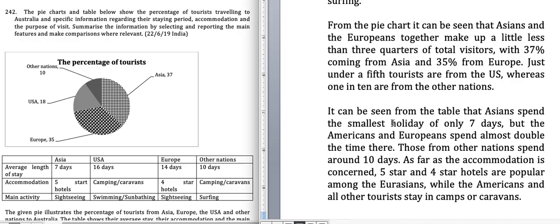From the table it can be seen that Asians spend the smallest holiday of only 7 days, but the Americans and Europeans spend almost double the time — 14 and 16 days respectively. Those from the other nations spend around 10 days. As far as accommodation is concerned, 5-star hotels and 4-star hotels are common among the Eurasians.